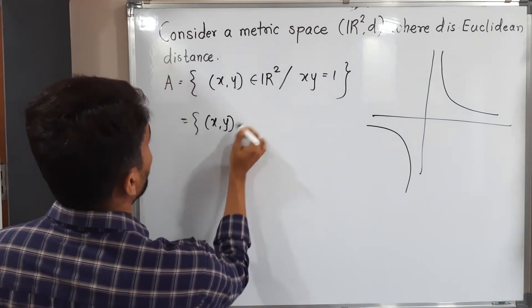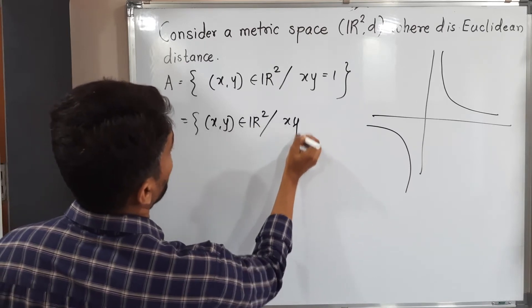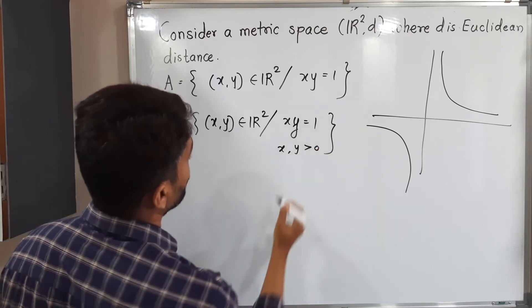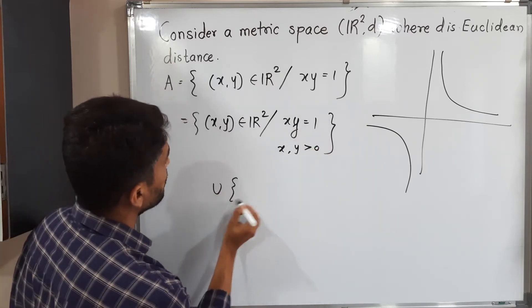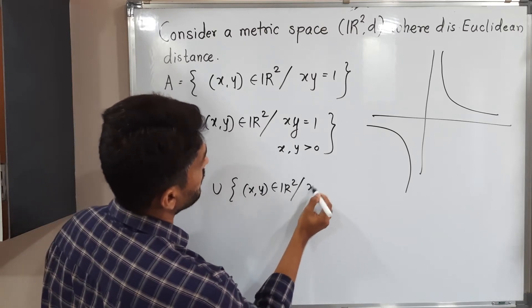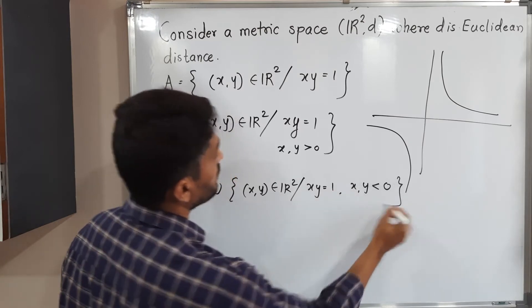So XY belongs to R² where X into Y is equal to 1, where X and Y both of them are positive, union XY belongs to R² such that XY is equal to 1 and X and Y both of them are negative.